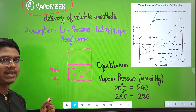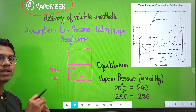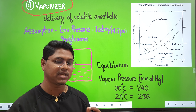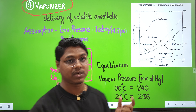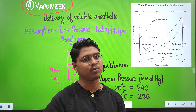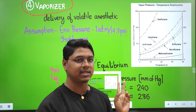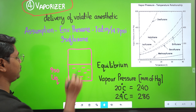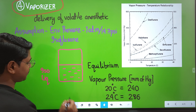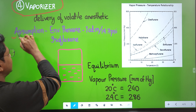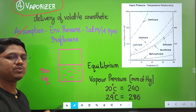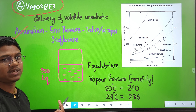The next and most important part is the vaporizer. The vaporizer is used for volatile anesthetics so they can be delivered into the breathing circuit and into the patient. For gaseous anesthetics like nitrous oxide, you do not need a vaporizer because it is already a gas and can be supplied along with oxygen. But for volatile anesthetics, a special instrument — the vaporizer — is required.